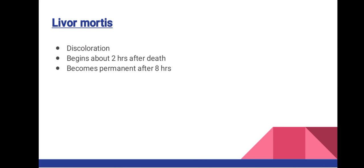Livor mortis is the discoloration of the body. It begins about two hours after death where blood settles due to gravity on the lower side of the body. For example, if a body is lying on its left side, blood settles on the left side due to cessation of circulation, resulting in discoloration of that side. This discoloration becomes permanent after eight hours.